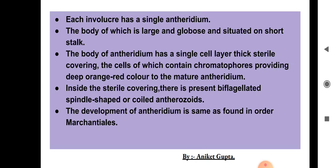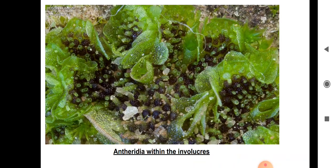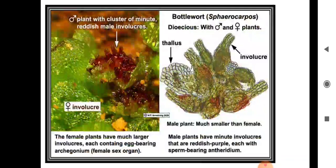The development of the antheridium is very similar to that of Marchantiales — an order in which we study antheridium development in various stages. The antheridia are present inside the involucres on the male plant.